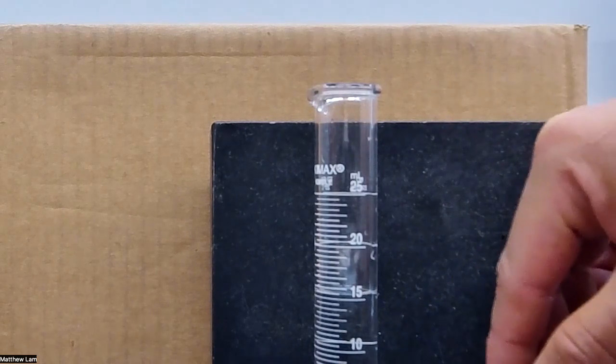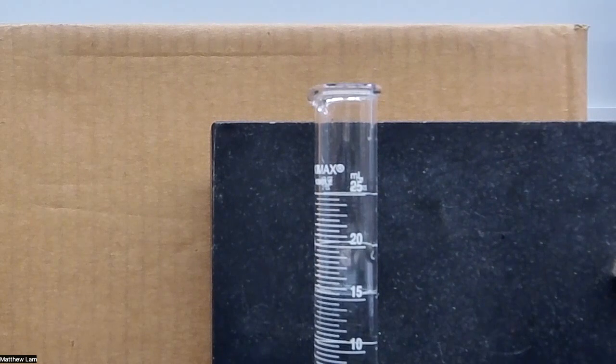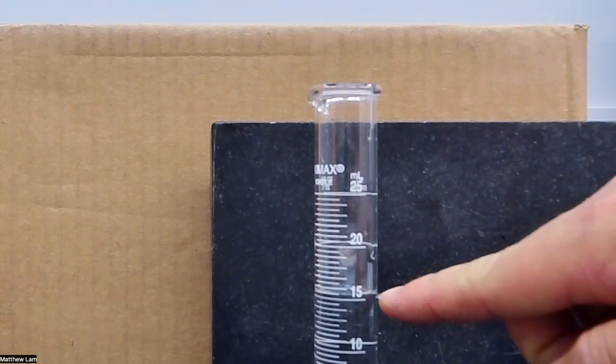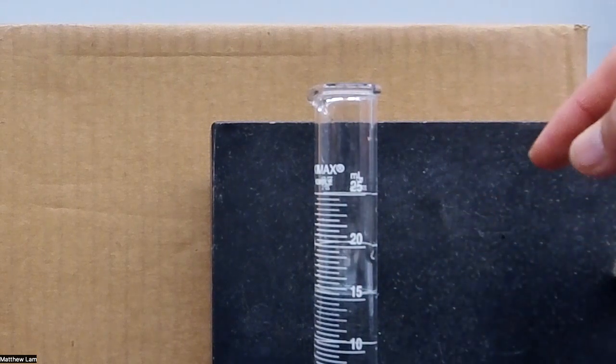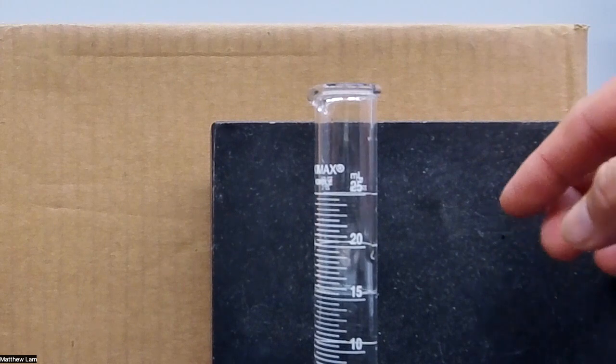And so if we read this, remember when reading a graduated cylinder, you want to read under the meniscus, and the meniscus is that curve at the top of the layer. You don't want to read the middle or the top. You want to read at the bottom of the curve.